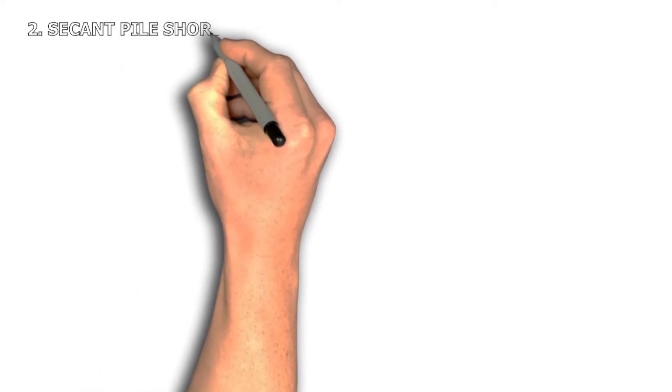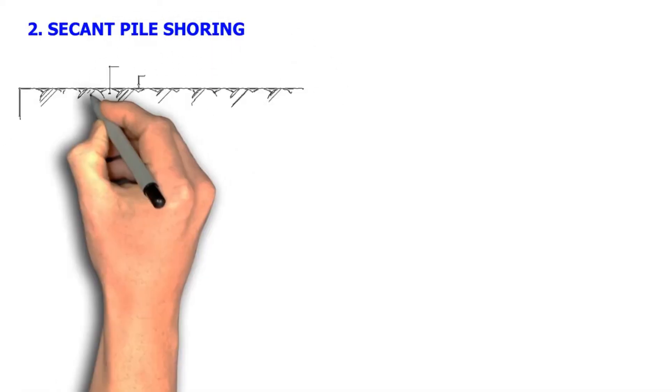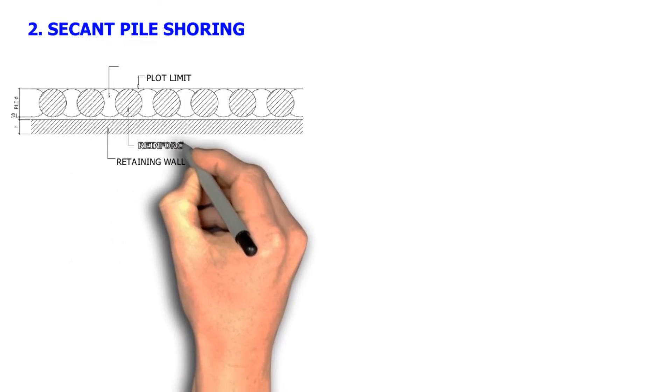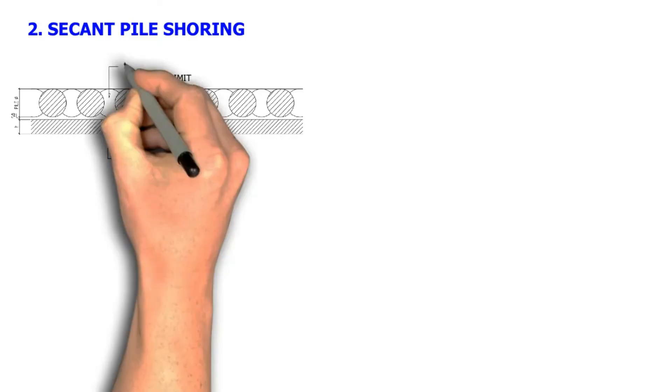Number 2, Secant pile shoring. Secant pile shoring is formed of intersecting two combinations of piles, with a reinforced secondary and unreinforced primary pile interlocking each other to form a continuous wall.